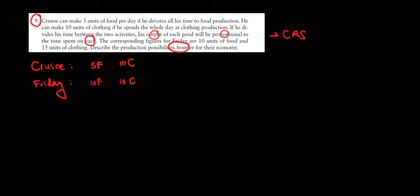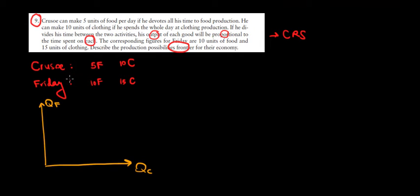Now let's draw the graph with quantity of food produced on one axis and quantity of clothing produced on the other. We need the total production intercepts for two individuals. For food: Cruso produces 5 units and Friday 10, giving 15 units total — that's the food intercept. For clothing: Cruso produces 10 and Friday 15, giving 25 units total — that's the clothing intercept.